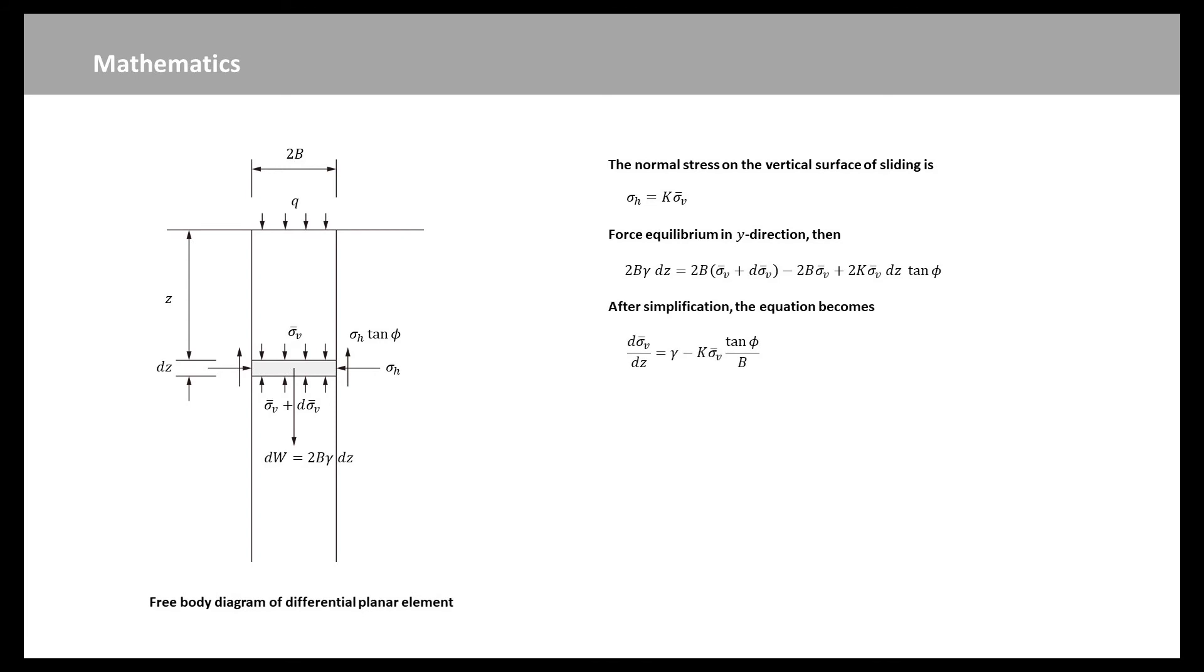Summation of all vertical forces acting on the differential planar element gives this equation. After simplification, the equation becomes this expression. The average vertical stress at any depth may be obtained by applying the boundary condition sigma-v bar equal to q at z equal to zero. Then we can solve the ordinary differential equation with general solution. The active lateral stress at any depth acting on the cut can be calculated by multiplying the equation sigma-v bar by k, which is given by this equation.